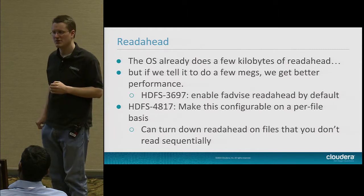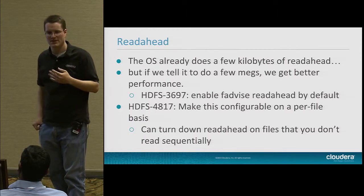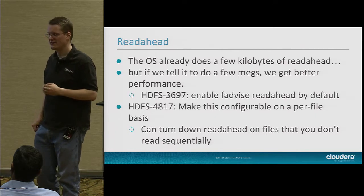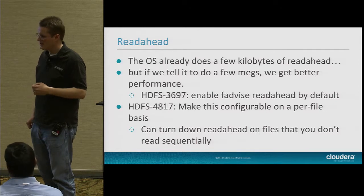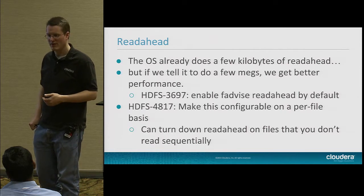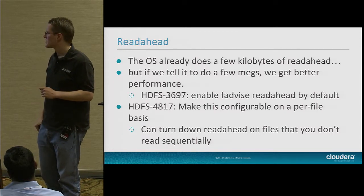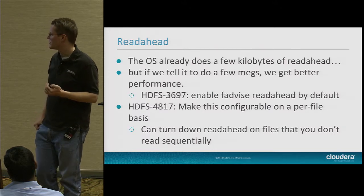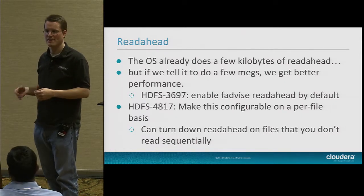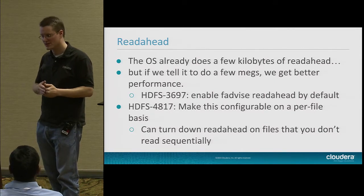Different clients need different levels of read ahead. HBase might do small 64K random reads, while a MapReduce job might read an entire file sequentially — where a few megabytes of read ahead is appropriate. We made this configurable on a per-open-file basis with HDFS-4817. It's a client-side configuration, and it's nice to be able to turn down read ahead when you don't want unnecessary reads.